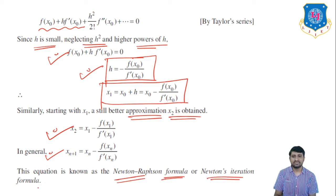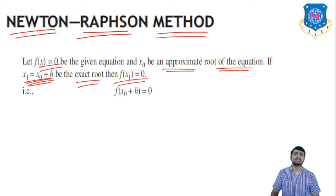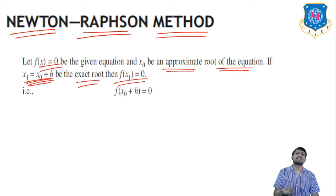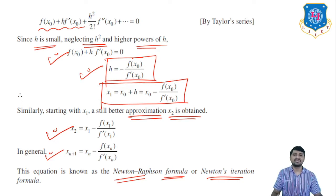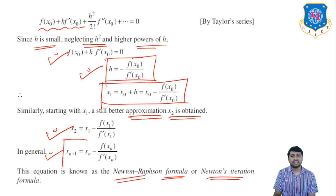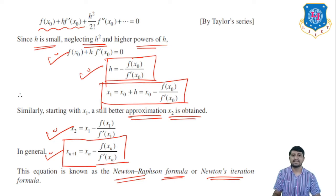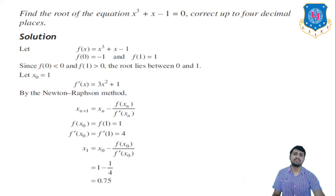The theory is straightforward and easy to understand. Again: let f(x) = 0 be the equation with x0 as the approximate root. We set x1 = x0 + h where h is very small. Using the Taylor series, we find h and substitute back to get x1 = x0 − f(x0)/f′(x0). Continuing, x2 = x1 − f(x1)/f′(x1), and in general x(n+1) = x(n) − f(x(n))/f′(x(n)). This is the Newton-Raphson formula.